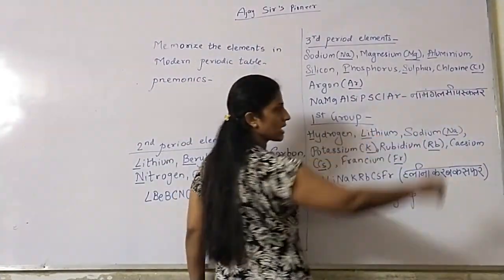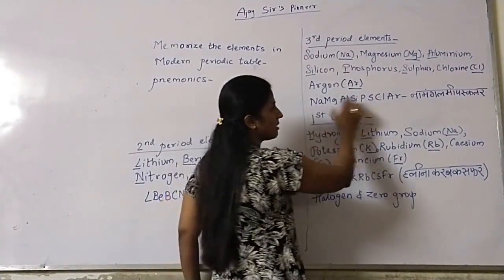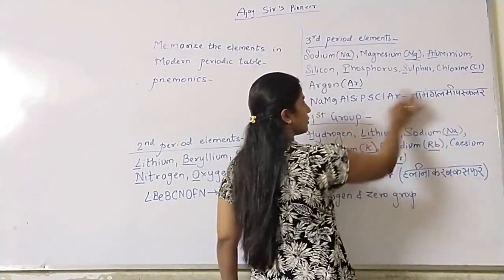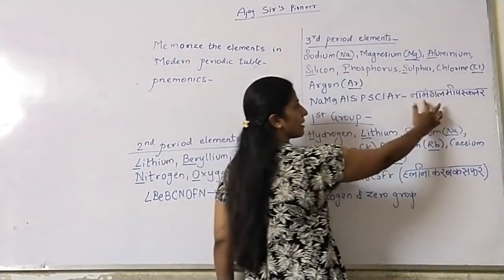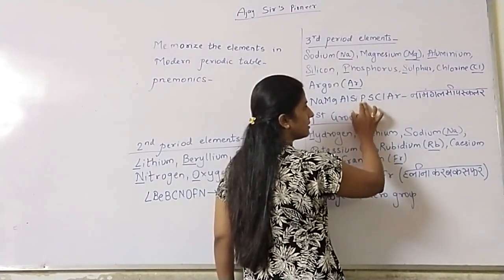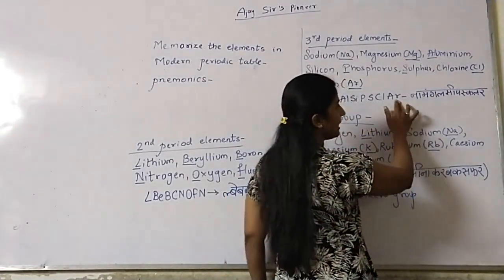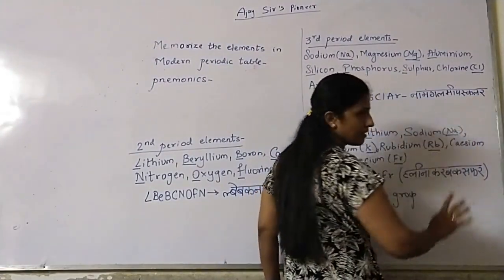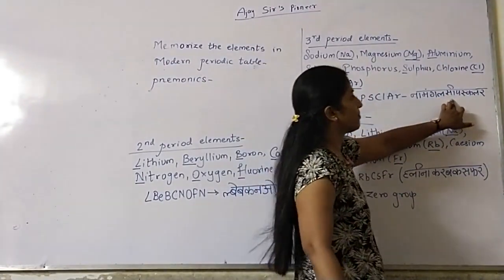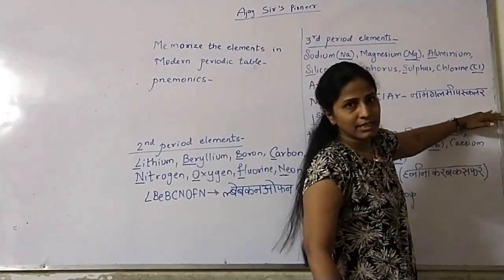All the initials are converted into a Hindi word. Na, Mag, Al together give us 'Namangal.' Then Si, Pas, Color — 'Sipas Color.' So the full Hindi mnemonic for the third period is: 'Namangal Sipas Color.' This is our Hindi word mnemonic for the third period elements.